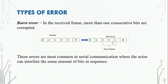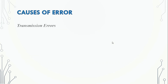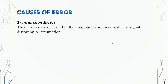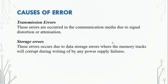Now we will see the causes of errors. The first one is transmission errors — these occur in the communication media due to signal distortion and attenuation when transmitting data from source to destination. The next reason is storage errors — these occur due to data storage issues such as memory track corruption during writing, power supply failures, or storage device errors.